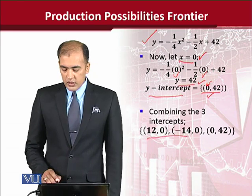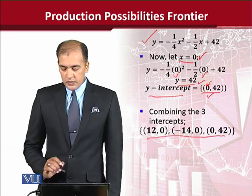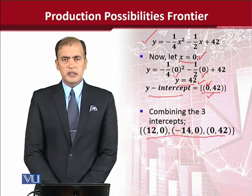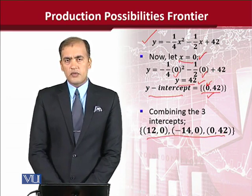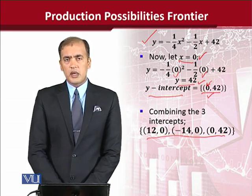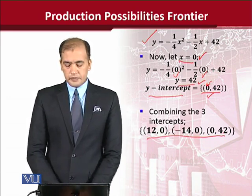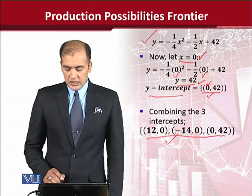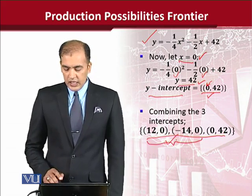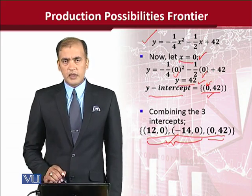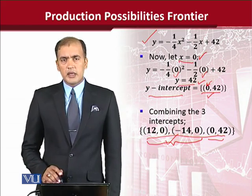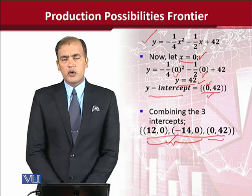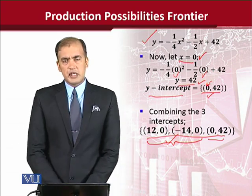We are combining all three of these ordered pairs to have more detailed information that we can use to plot the diagram. These are the three intercepts — the two x-intercepts and the one y-intercept — which we use to draw the production possibilities frontier.